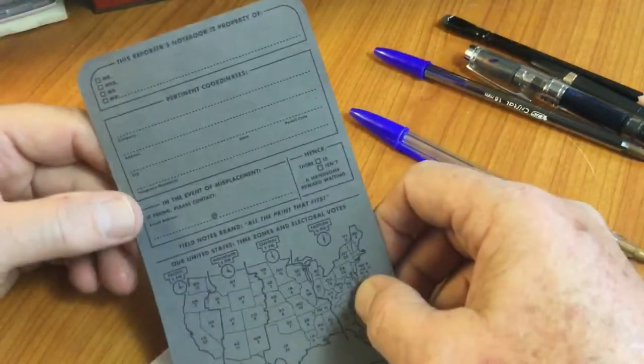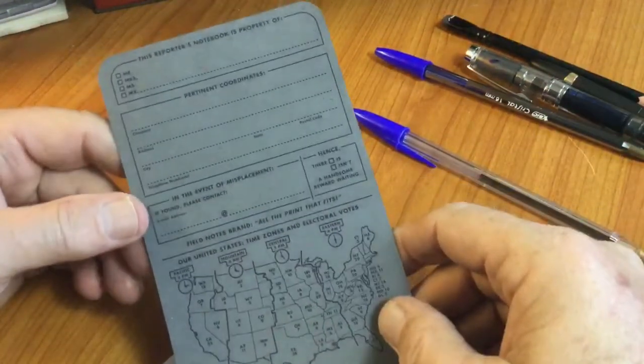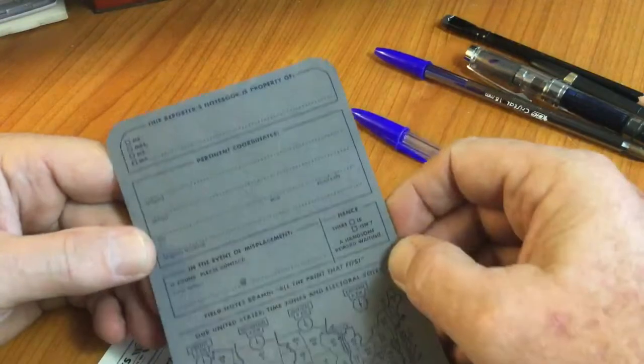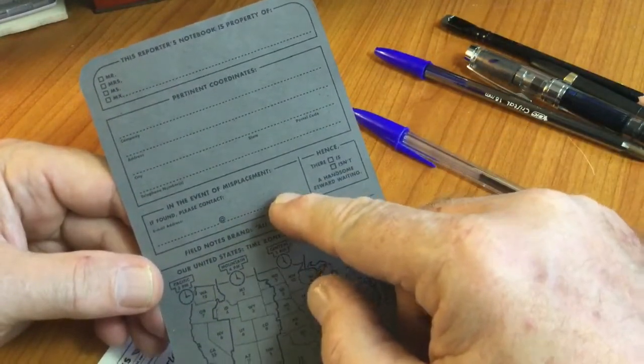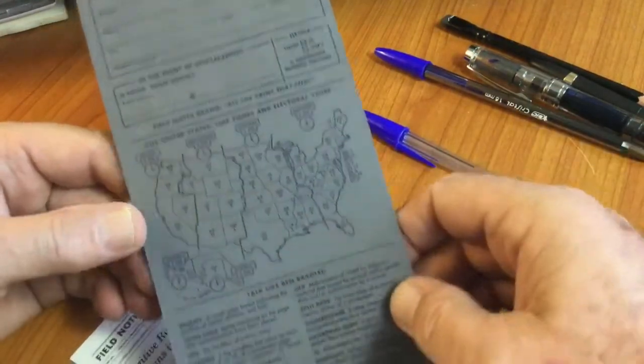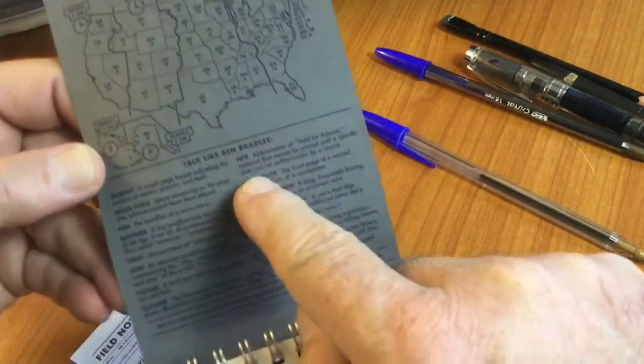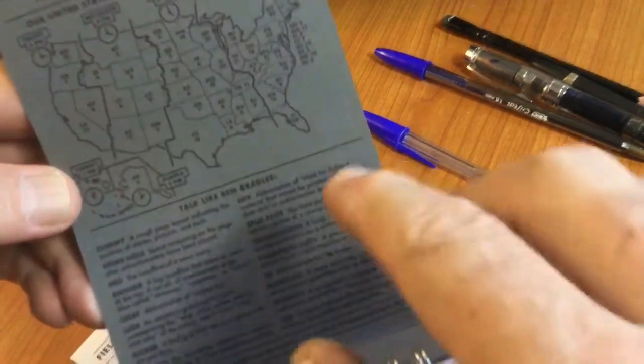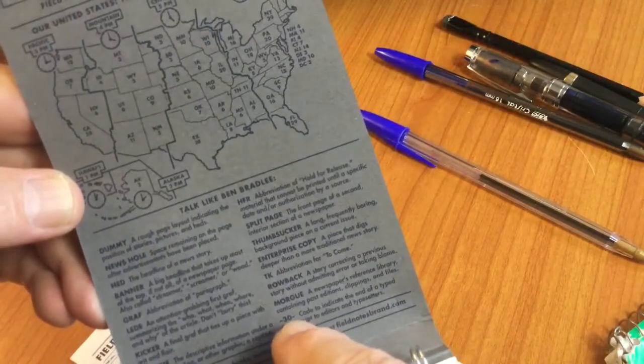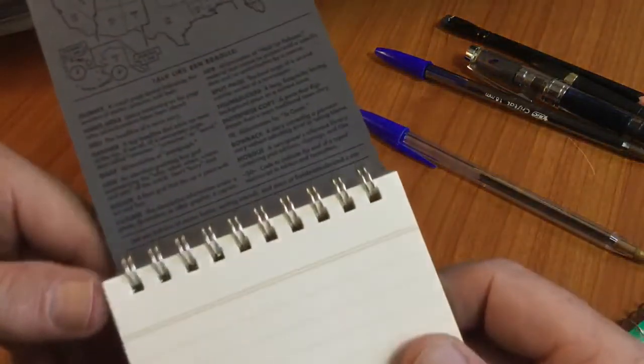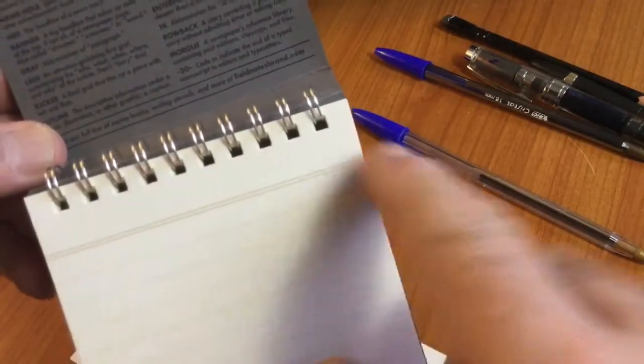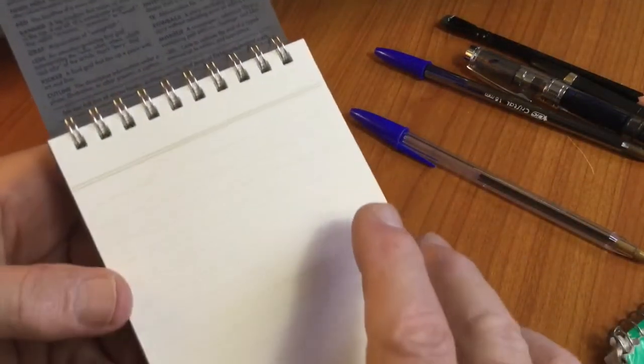So let's open this up. Now, the thing about Field Notes, of course, is they are constantly trying to put all kinds of cool information in there. So it gives you a place to put your name. Mr. Mrs. Ms. MX. Pertinent coordinates. If, in the event of misplaced, if found, please contact. Here's the time zone map of the United States. Here's how to talk like Ben Bradley, who, if you remember, was the editor of the publisher of the New York Times back in the day. So there's all these little classic journalistic phrases from back in the classic era of journalism. They do a lot of humor in their notepads. So this is what they call the double coil binding. Definitely an interesting style. You notice the holes are square. They go out of their way to do the fine details really well. This is kind of a cream colored paper, and there's a double solid line, a little more boldly printed. The corners are rounded.